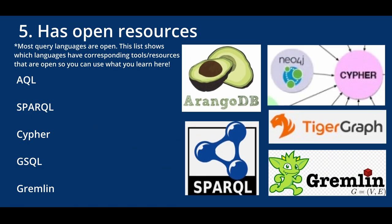Category five is open resources — open data sets, open tutorials, open projects, and open tools or modeling techniques you can go and check out. If you want to try this out yourself, what are the ways you can do that without paying for something? Starting with query languages that have corresponding open resources makes it low risk: you can make mistakes and reference a lot of material without any upfront cost.